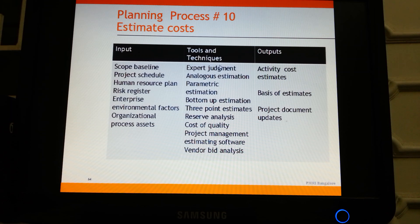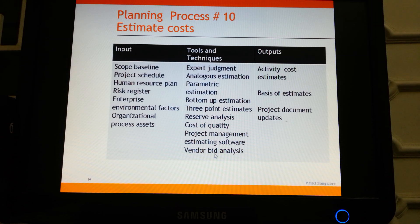The tools and techniques used for cost estimation are expert judgment, analogous estimation, parametric estimation, bottom-up estimation, three-point estimates, reserve analysis, cost of quality, project management estimating software, and vendor bid analysis. The outputs are the activity cost estimates, the basis of estimates including assumptions, and project document updates.